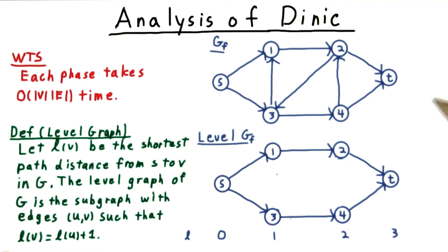The level graph can be built by running breadth-first search and saving all forward edges while ignoring backwards and lateral ones.